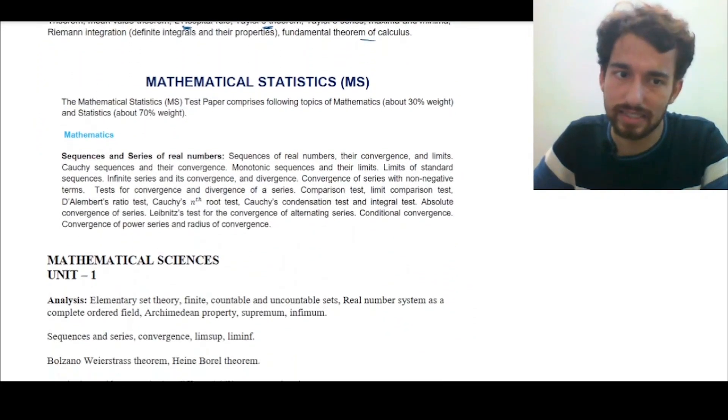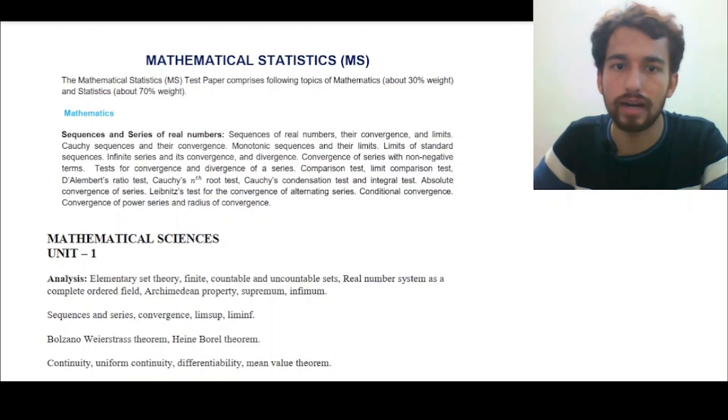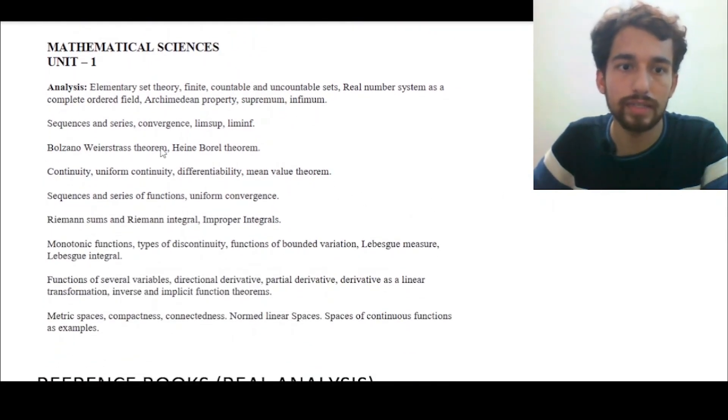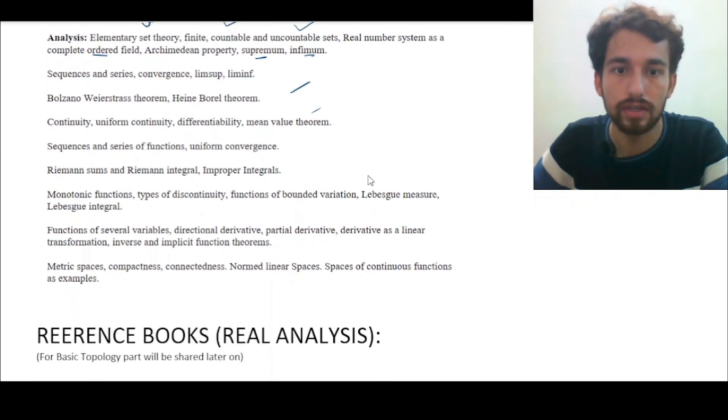Next, for IIT JAM mathematical statistics, you can go through in similar lines. There will be some addition, but we will cover every part of the syllabus. Now, just a quick glimpse of the real analysis portion on CSIR NET mathematical sciences examination. It starts from elementary set theory, which is a very fundamental concept everyone should know. The real number system is a complete ordered field, where we discuss suprema, infima of sets, why Q lacks the completeness property. We are going to discuss covering all these topics.